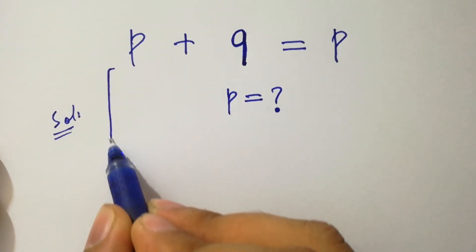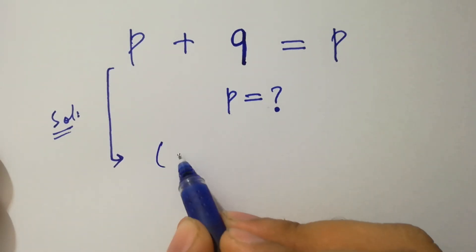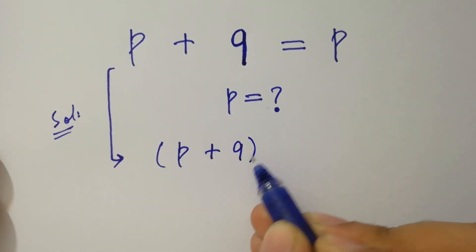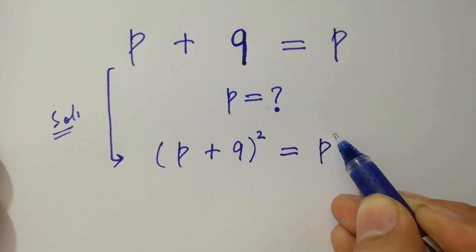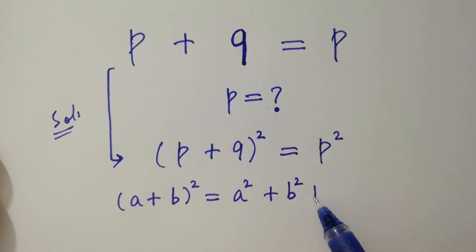To solve this problem, take square on both sides: p plus 9 squared equals p squared. By this we know the formula of a plus b whole square, which is equal to a squared plus b squared plus 2ab.